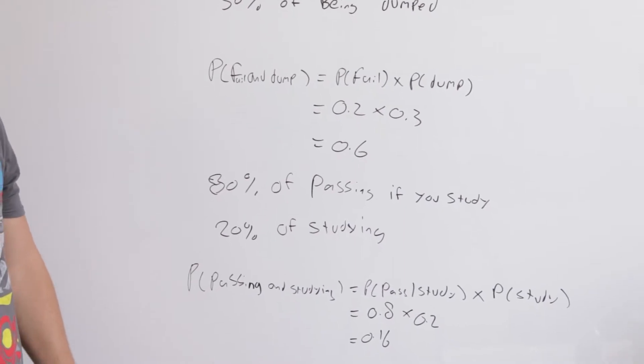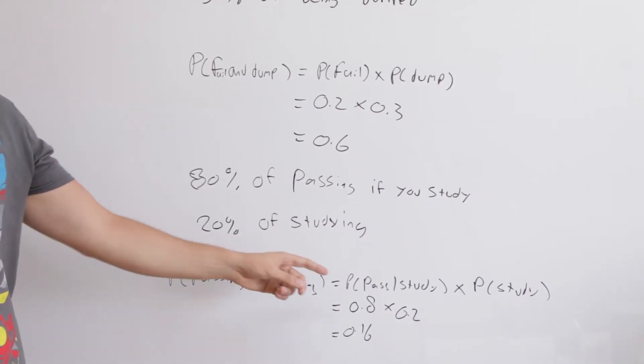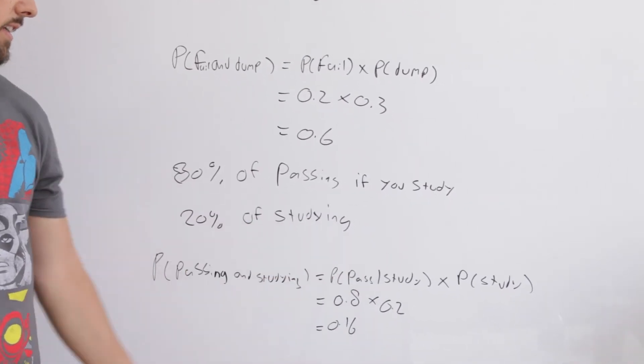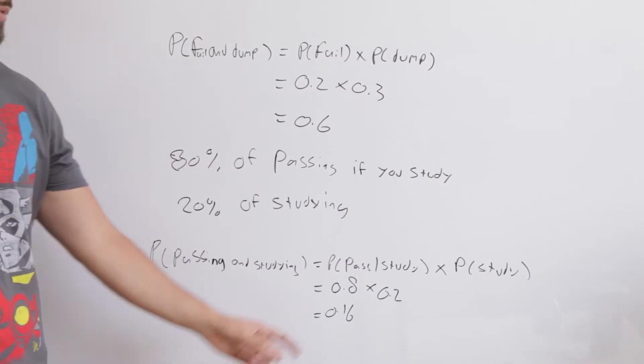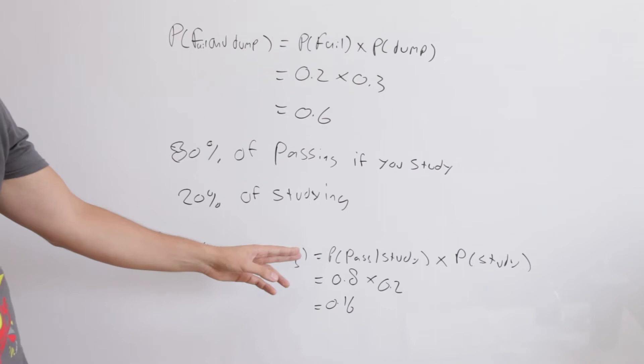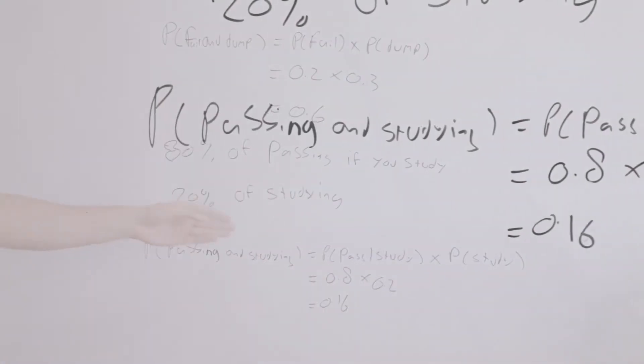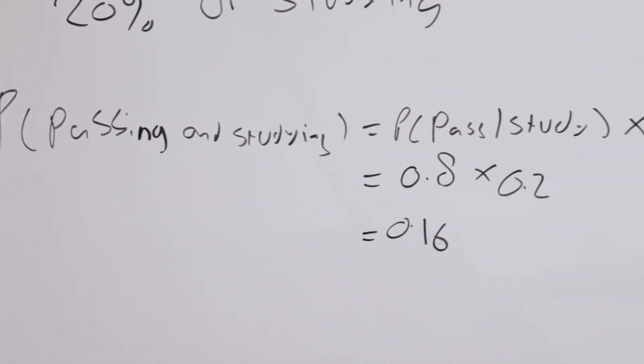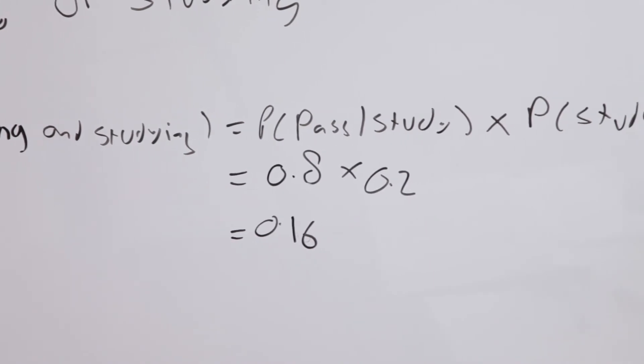We set it up. The probability of passing given that you study is equal to 80%. The probability that you study is 20%. The probability of passing and studying is equal to the probability of passing given that you study times the probability that you study.